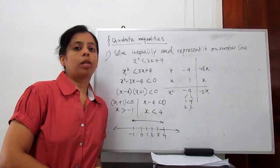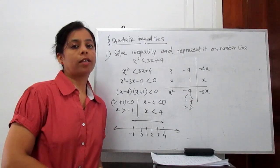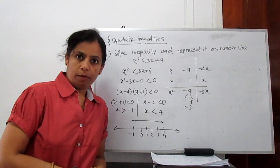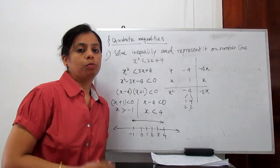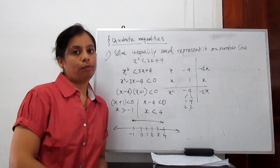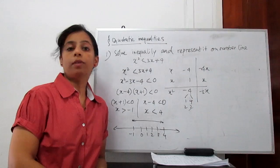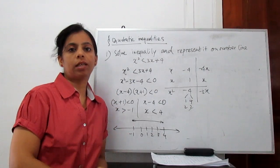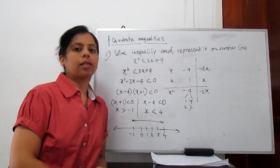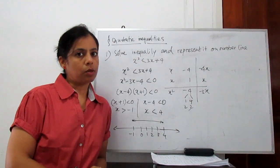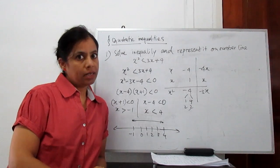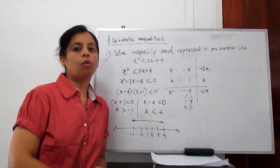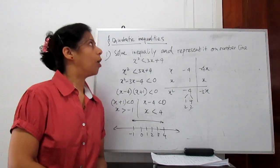We will talk about the discriminant, how to find the roots, sum of roots, and product of roots, and then how to find the nature of the quadratic equation with the help of the discriminant — b squared minus 4ac. If our equation is ax squared plus bx plus c equals 0, then the discriminant is b squared minus 4ac. With the help of that, we can find the nature of the roots.